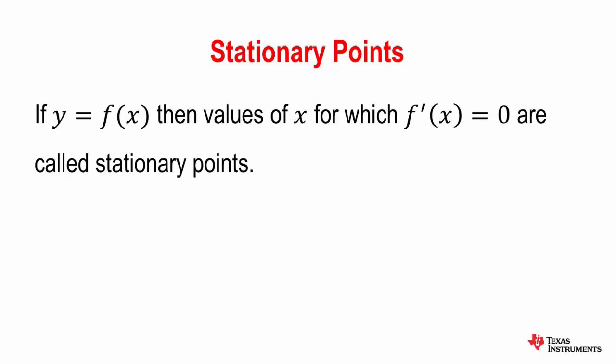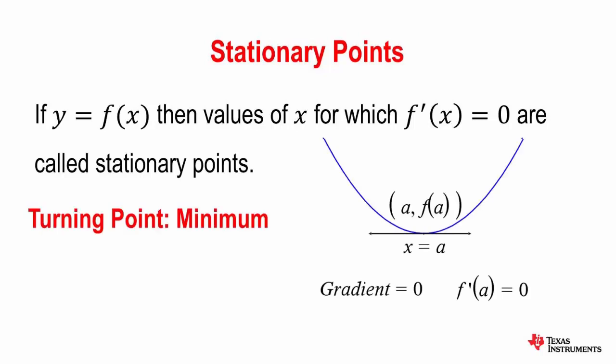There are two types of stationary points. A minimum turning point when the gradient is zero, but if x is smaller than a the gradient is negative and when x is greater than a the gradient is positive. So a minimum turning point is like the foot of the bottom of a valley.